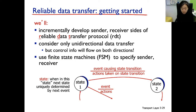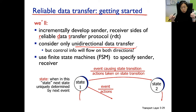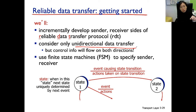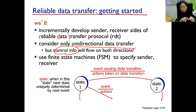One more thing: we only consider unidirectional data transfer. Data goes from one machine to another in one way only — there's no data coming back. The receiver might send feedback back, but those are called control info. Control info can go both ways, but data only goes from sender to receiver.